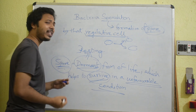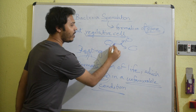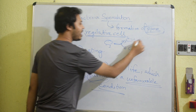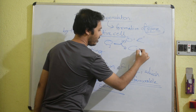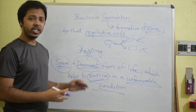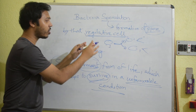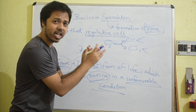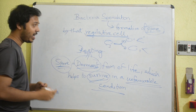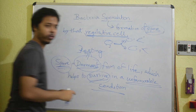By the help of binary fission, from one cell it can divide into two cells, and after that it can again and again divide — division will continue. This condition of the cell is called the vegetative cell. That vegetative cell can produce a spore.